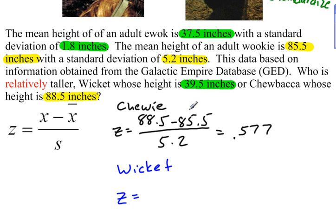His data value that we're concerned with is 39.5, minus the mean for all Ewoks is 37.5, divided by the standard deviation for the Ewoks, which is 1.8.